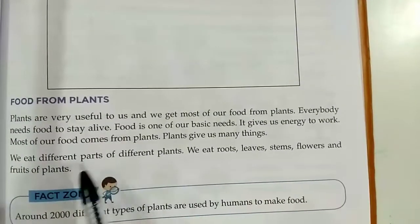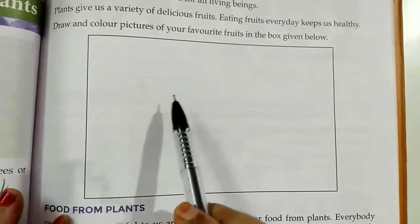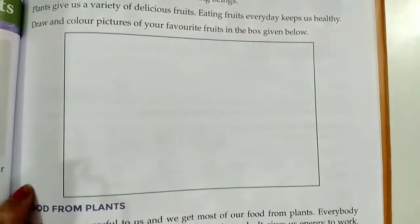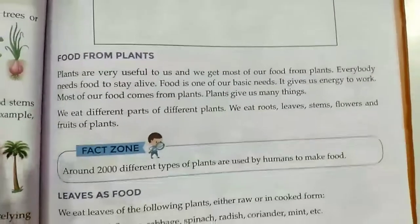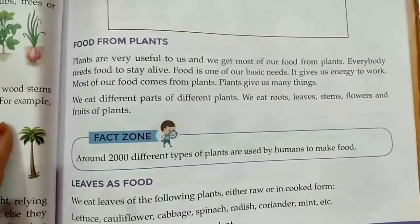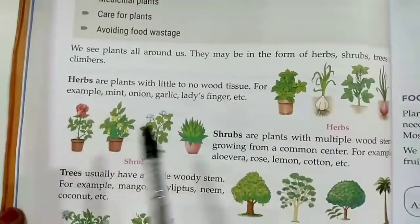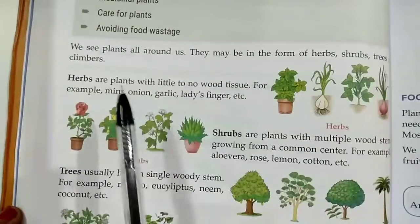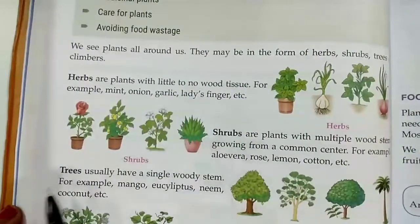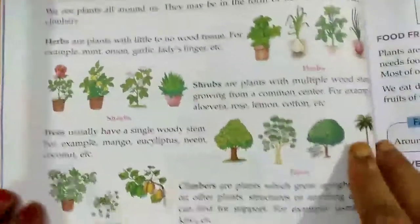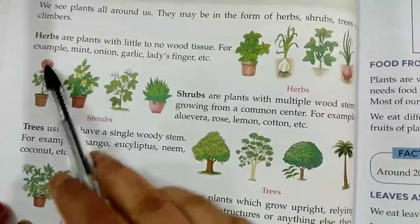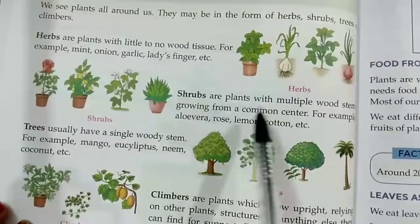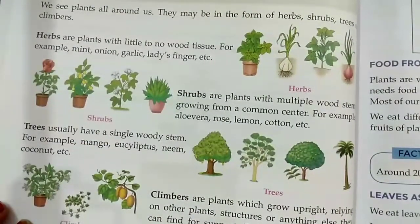We are going to stop here. Your homework is to draw the picture of your favorite fruit and write the name. Also, write the difference between herbs, shrubs, trees, and climbers — what are herbs, what are shrubs, what are trees, and what are climbers — along with their definitions and examples. Thank you, children, take care of yourself.